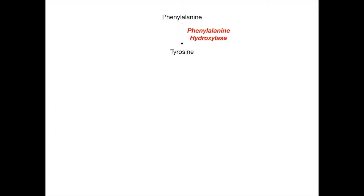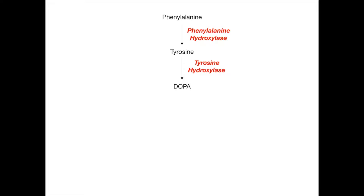Phenylalanine gets converted into tyrosine by the enzyme phenylalanine hydroxylase. The enzyme name tells you that phenylalanine is being hydroxylated. Tyrosine will then go to DOPA — dihydroxyphenylalanine — through the enzyme tyrosine hydroxylase. Look at the enzyme name: tyrosine hydroxylase, so it must be acting on tyrosine.